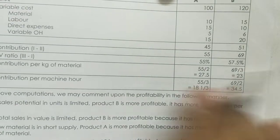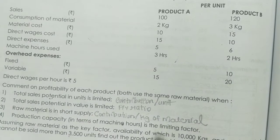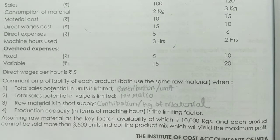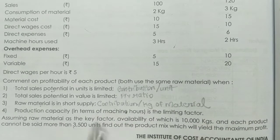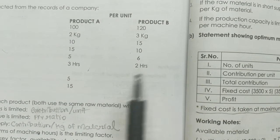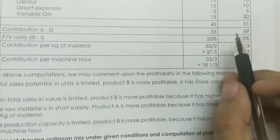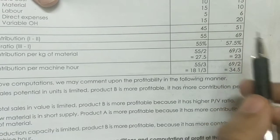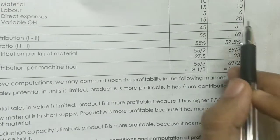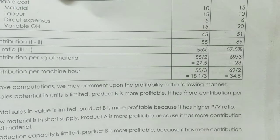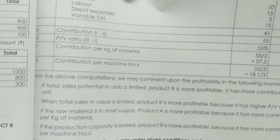If we have the P-V ratio, we can pick it up. This model gives a P-V ratio of 50 for one product and 75 for another. Units are the limiting factor, so we calculate total potential in value to find which is limited and which is more profitable.